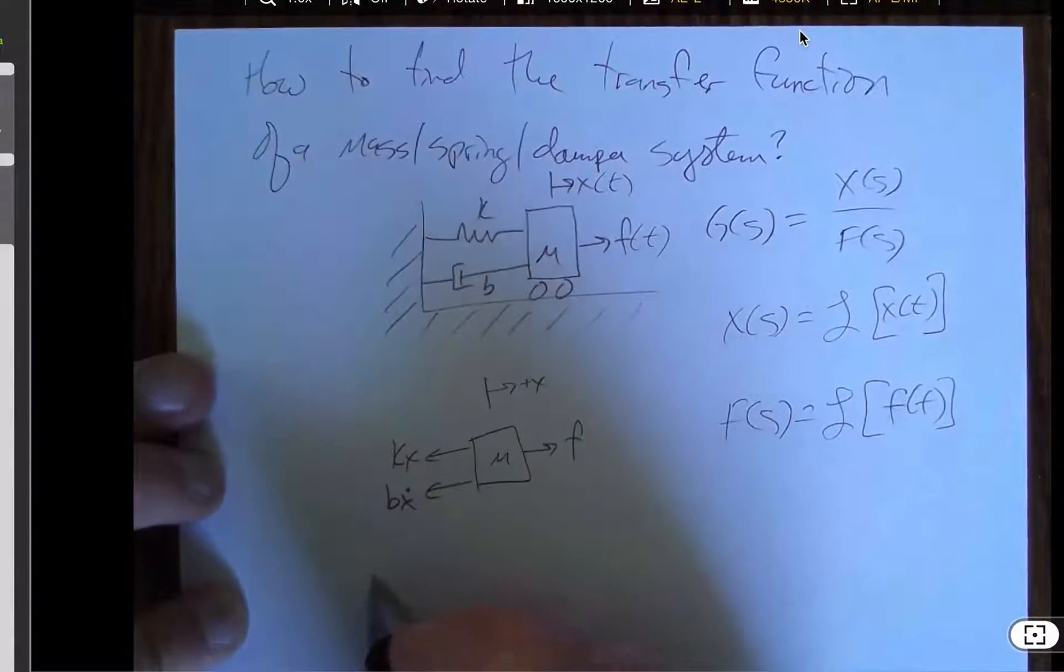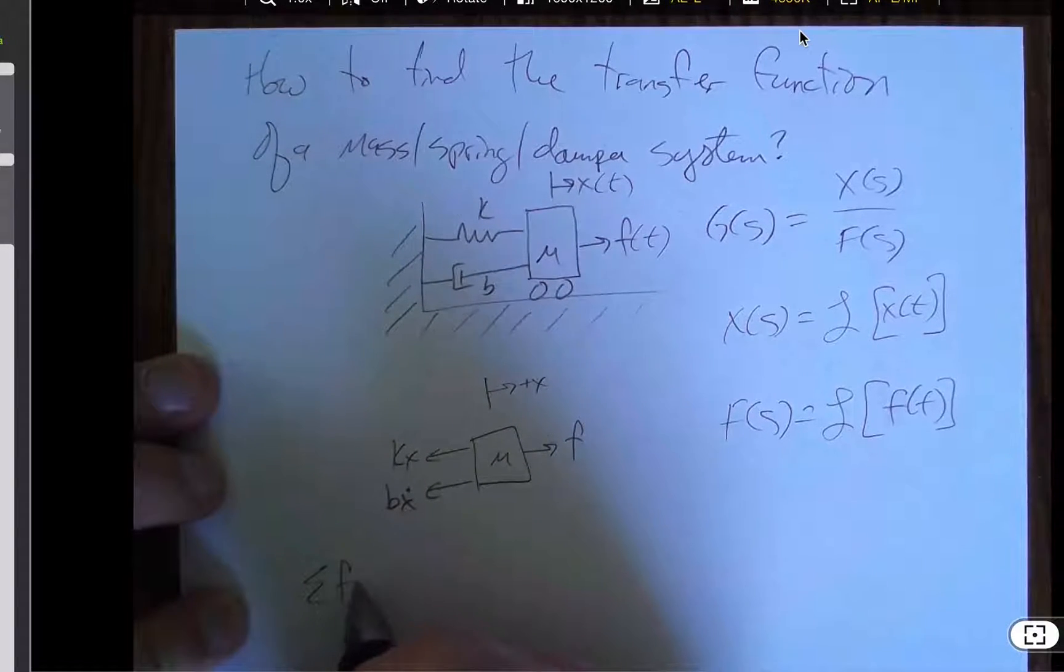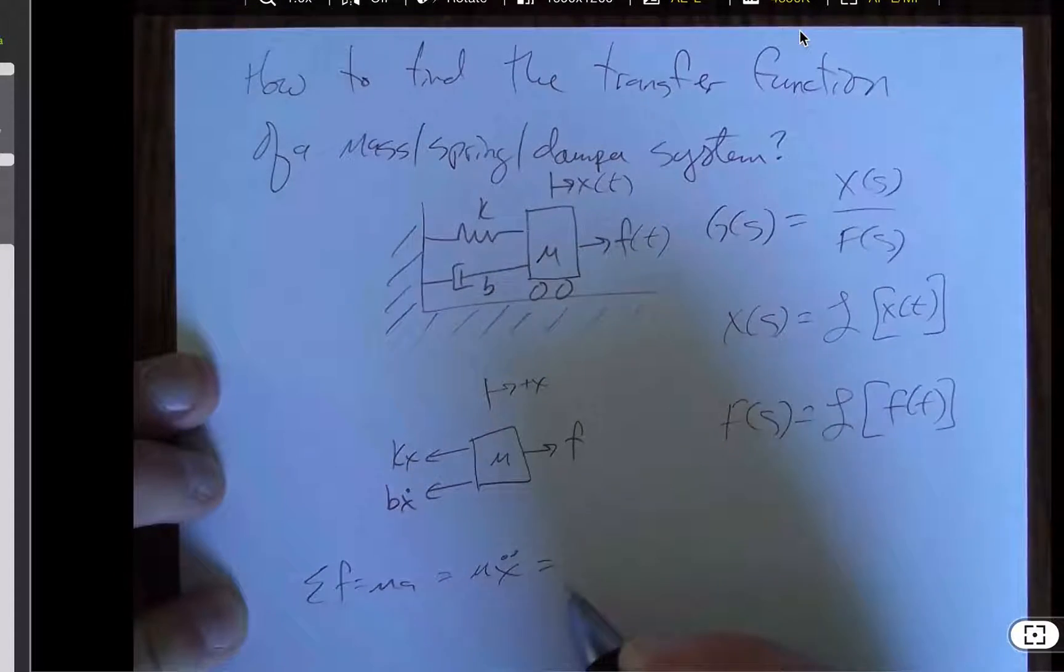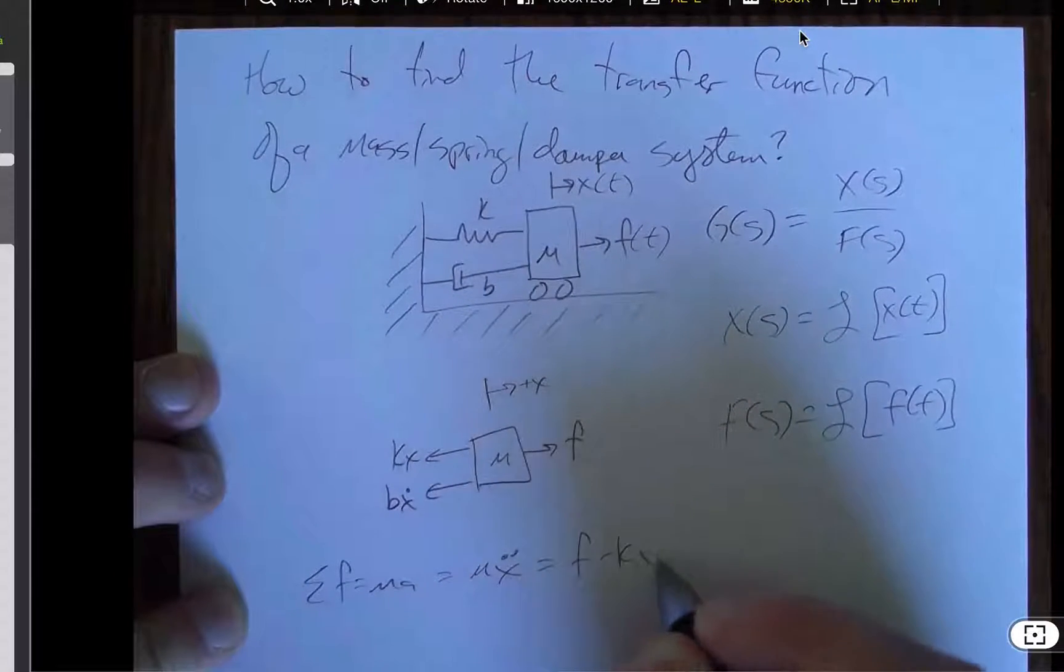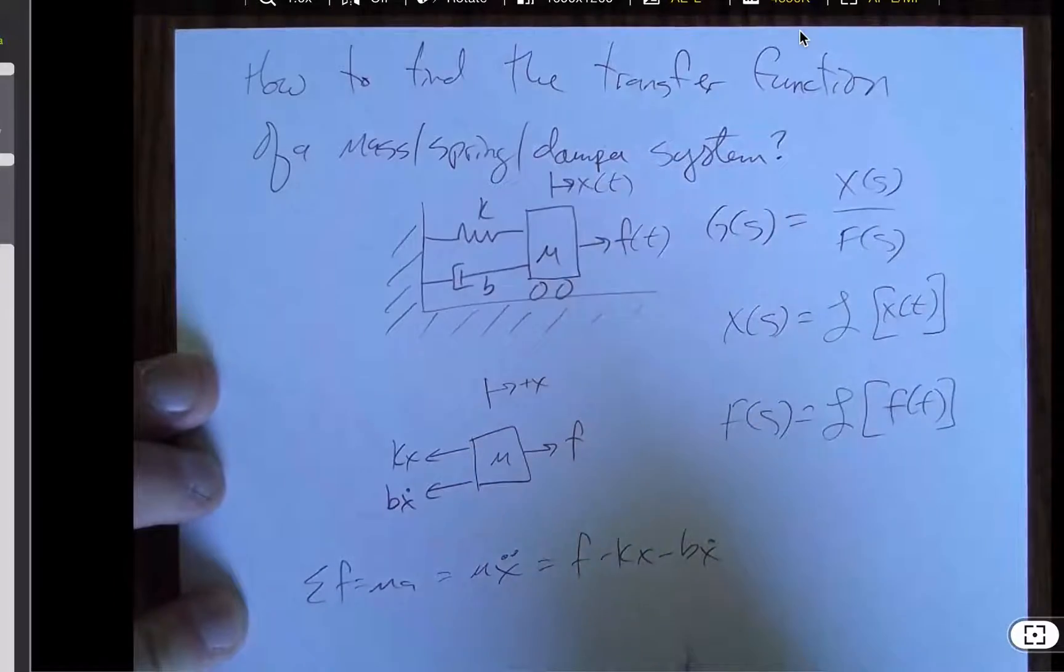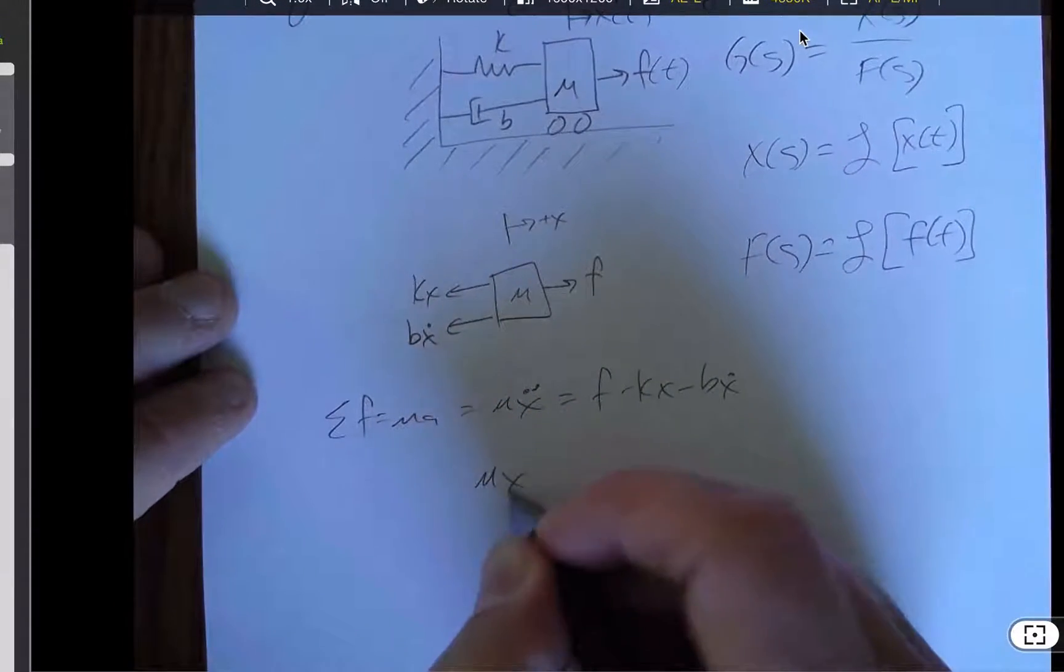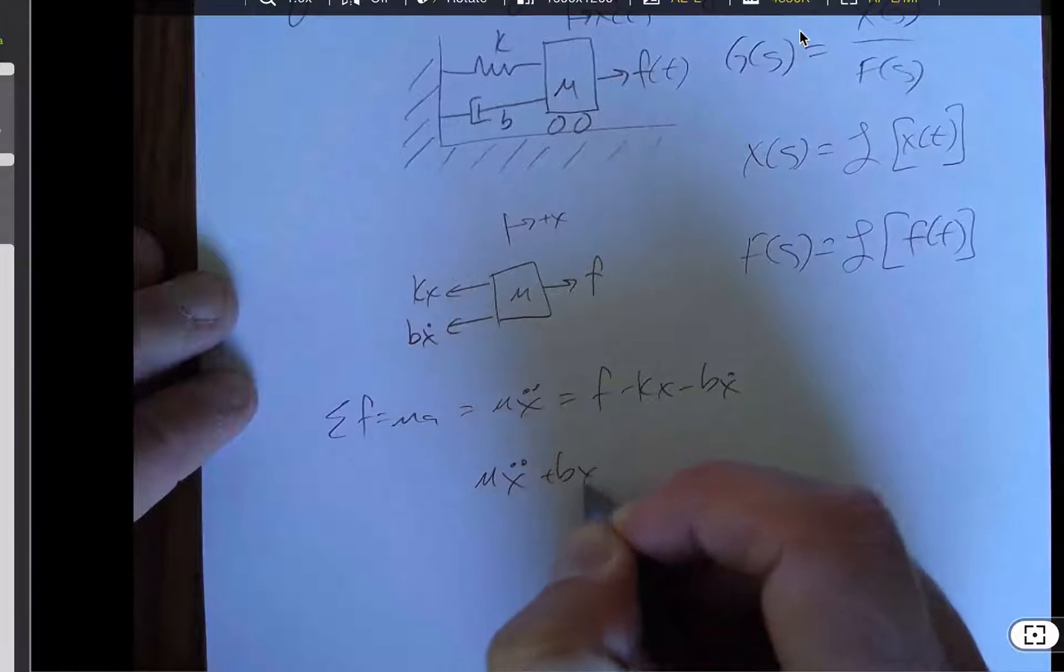And so if we say the sum of the forces is equal to mass times acceleration, we mean mx double dot is equal to f minus kx minus bx dot. And now we're going to add those across until we get to the hopefully familiar form.